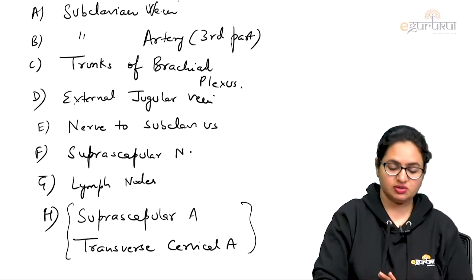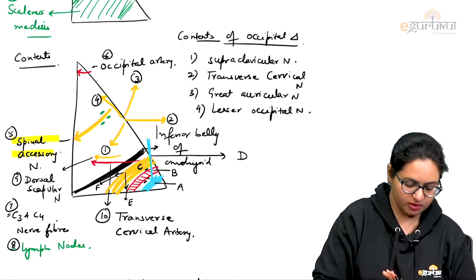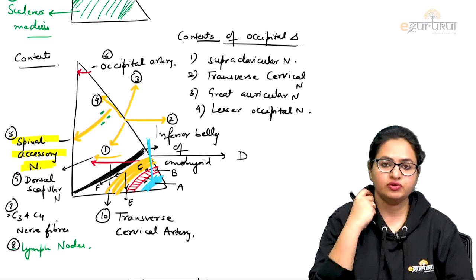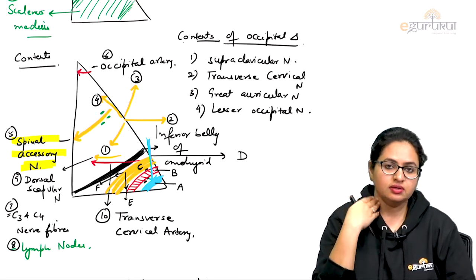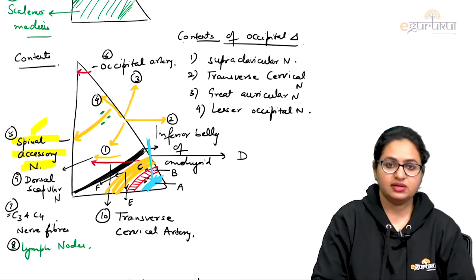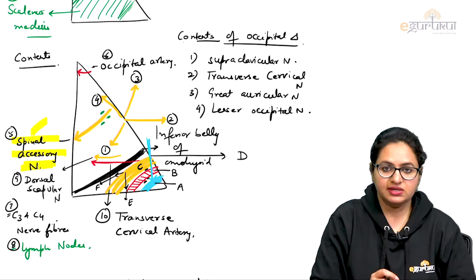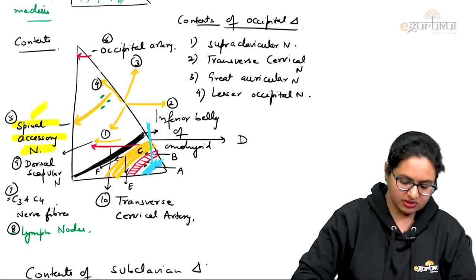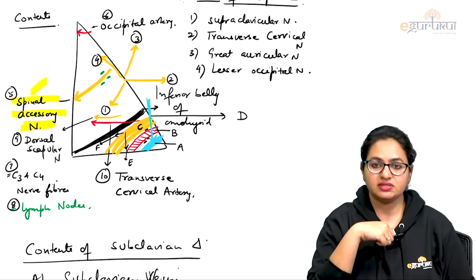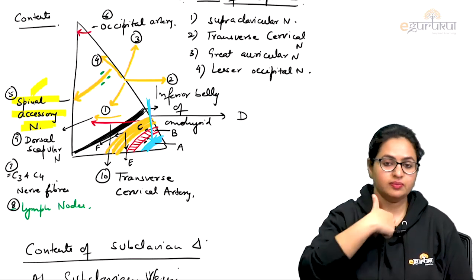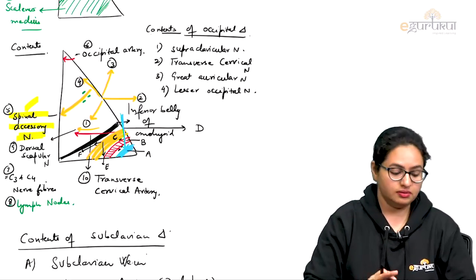All these structures are the contents of the occipital as well as the subclavian triangle. The spinal accessory nerve is a very important structure — when removing enlarged lymph nodes in the posterior triangle, or during any surgery, a nick in the posterior triangle may injure this nerve, leading to paralysis of the sternocleidomastoid and trapezius, and specifically loss of the shrugging movement. The subclavian artery in the subclavian triangle can be palpated by placing the thumb in the subclavian triangle.